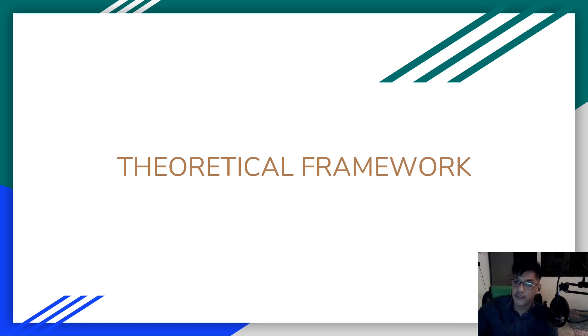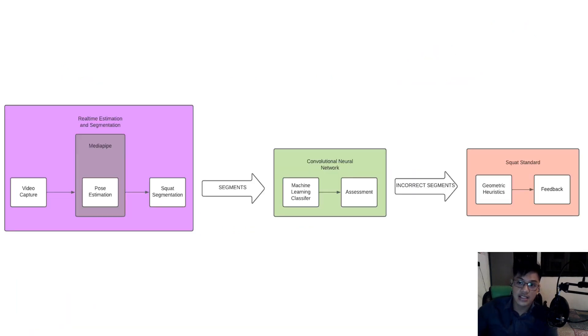As for the theoretical framework, which also acts as the AI pipeline of the entire study, the framework consists of three main modules. The real-time estimation and segmentation module, which consists of the pose estimation and the squat segmentation sub-modules. Segments from this module will be passed on to the CNN module, which classifies each segment. Each incorrect segment will be passed on to the squat standard module, where geometric calculations will be implemented to achieve a certain feedback.